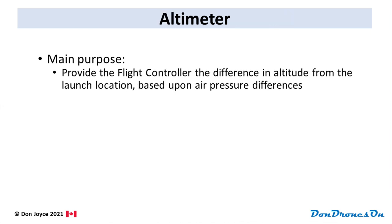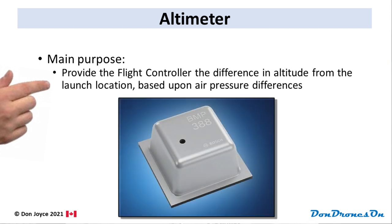Here's another key sensor: the altimeter. The drone's altimeter detects the barometric air pressure and can determine the difference in height between a flight location and the launch site based upon the difference in air pressure. The combination of GPS, compass, and altimeter provide the drone with a fairly precise determination of its location in space and its orientation.